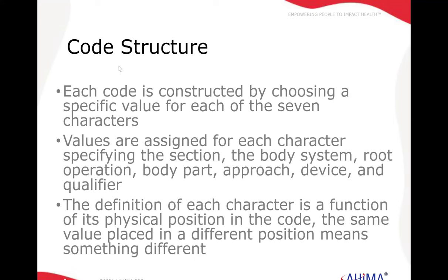Each code is constructed by choosing a specific value for each of the seven characters. The values are assigned for each character specifying the section, the body system, the root operation, the body part, the approach, the device, and the qualifier. The definition of each character is a function of its physical position in the code — so the root operation will always be in the same position of each of the seven characters. That will never vary. The root operation itself may vary, but it will always be in the same spot in the seven-character sequence.